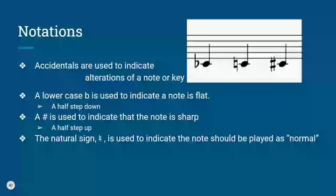Accidentals are used to indicate alterations of a note or a key signature. A lowercase b is used to indicate that a note is flat, which is a half step down. A sharp sign — a hashtag, a pound sign — is used to indicate that the note is sharp, a half step up. The natural sign is used to indicate that the note should be played as is, as normal, with no changes to the pitch at all.